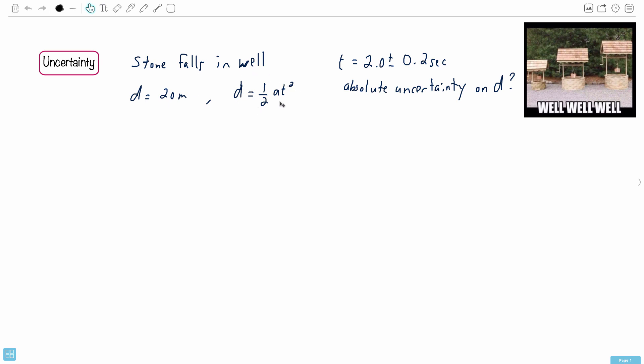It falls with this equation - if you recognize this, this is one of your equations of motion. This is displacement equals half a t squared. The time it takes to fall down that well is two seconds plus or minus 0.2. We're asking for the absolute uncertainty on D. We're told that the uncertainty on A is negligible.